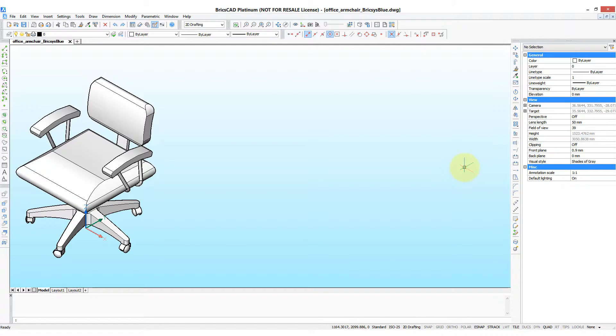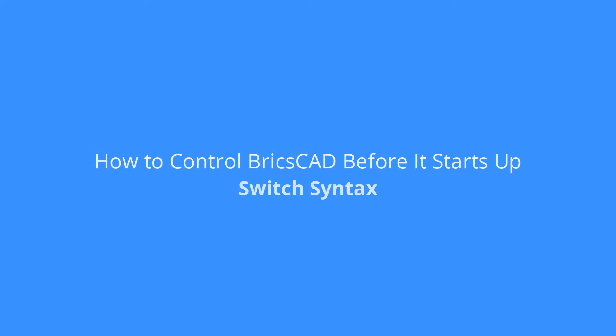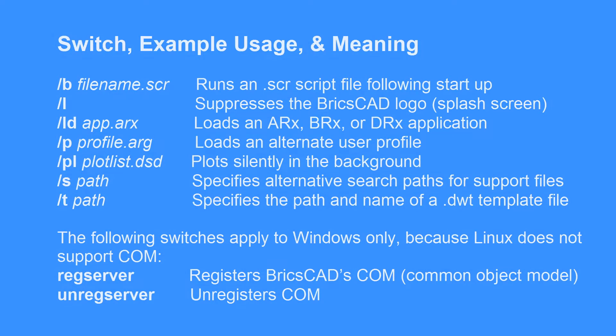Click OK, and now when I double-click the icon, BricsCAD loads and immediately shows the drawing that I specified. You can add more than just file names into the properties dialog box — you can also put in what are called switches. Switches instruct BricsCAD to do a specific task, and often a file name is included as well.